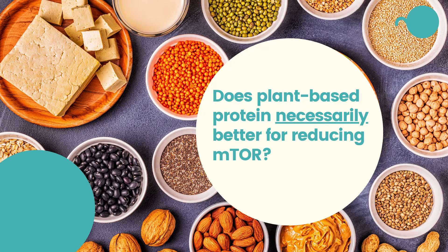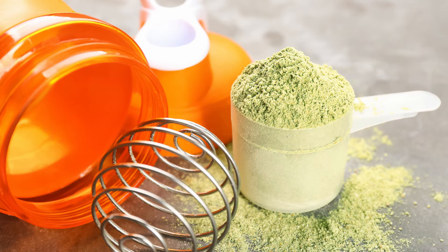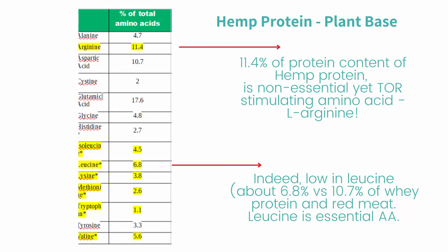That led me to another question: animal-based protein has more leucine, which is true. So I thought, let's replace the whey protein I used to consume with a protein that has the least amount of leucine. And you know which protein powder has the least amount of leucine? Hemp protein. So I went to hemp protein, and lo and behold, it has a massive amount of L-arginine, which to me is much worse. Let's talk about L-arginine — here are three studies, and I'm going to get back to hemp powder as well, because this is important when it comes to plant-based protein.